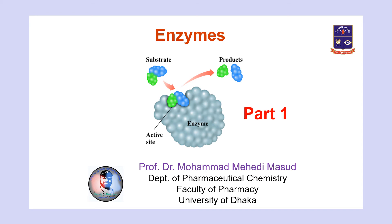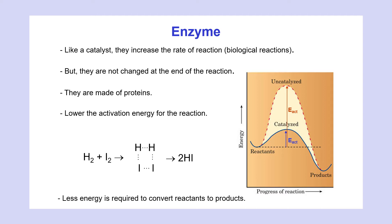Assalamu alaikum dear students. Today in this lecture I shall discuss about enzymes. Enzymes are catalysts which increase the rate of a reaction by changing the way a reaction takes place, but are not changed at the end of the reaction. An uncatalyzed reaction in a cell may take place eventually, but not at a rate fast enough for survival. For example, the hydrolysis of proteins in our diet would eventually occur without a catalyst, but not fast enough to meet the body's requirements for amino acids. The chemical reactions in our cells must occur at incredibly faster rates under mild conditions of pH 7.4 and a body temperature of 37 degrees centigrade.